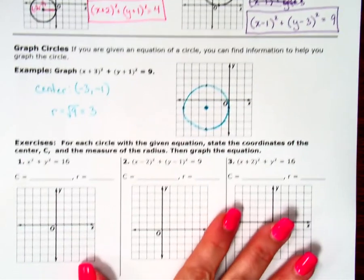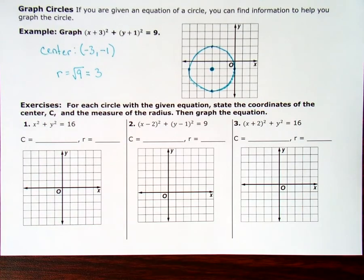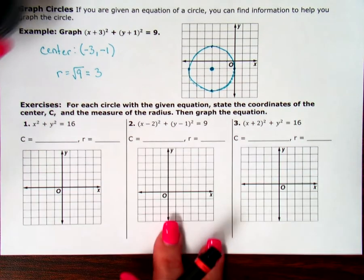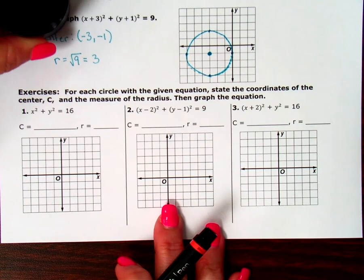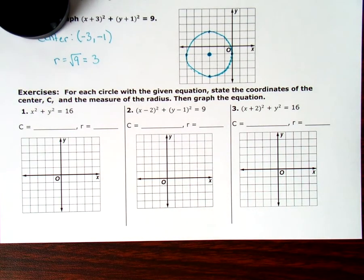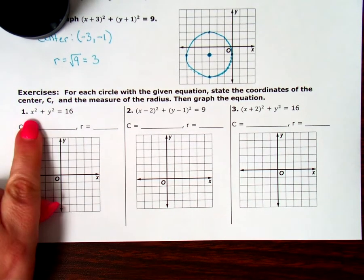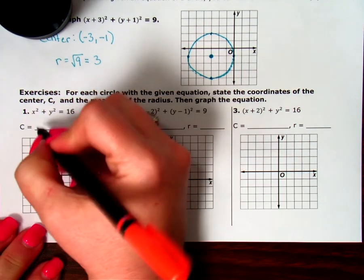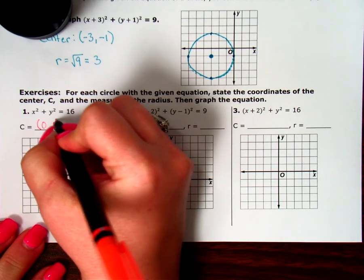Let's look at the next one. For each circle with a given equation, state the coordinates of the center C and the measure of the radius. Then graph the equation. I know my center. If there's no number by them, my center must have been the origin. It must have been 0, 0.